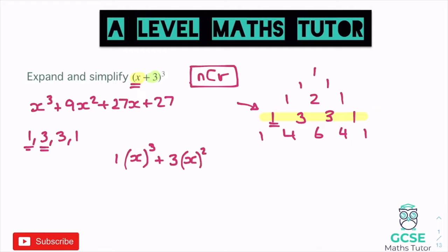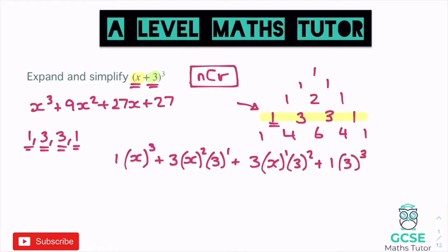We need to balance out the powers: x is going down and the three is going up in powers. So the next piece is three lots of x to the power of one times three to the power of two. And then the last piece: we have one lot of x to the power of zero — which disappears — times three to the power of three. The x is now gone and we just have three cubed, which balances out to that total power of three.